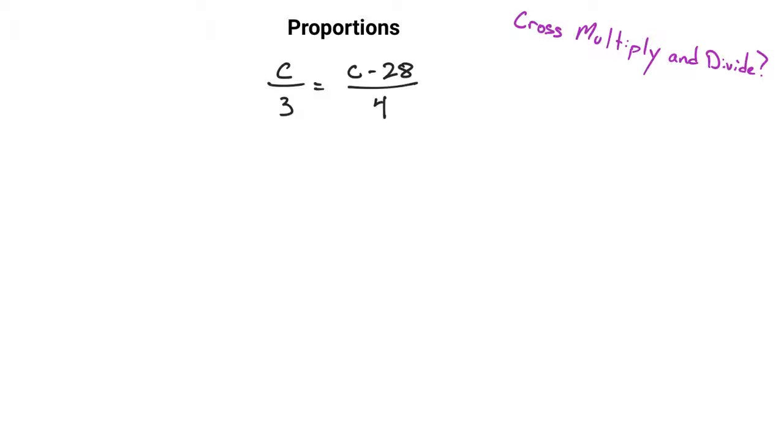As in this problem, you can cross-multiply, and so that would be then 4 times c, and that would be 3 times c minus 28. And that would be the cross-multiply step, but the divide step doesn't make any sense for this particular problem, because you still have other work you need to do before you can divide.